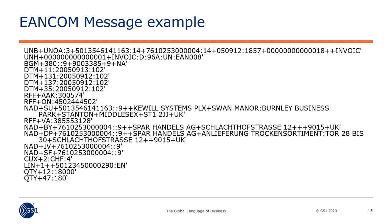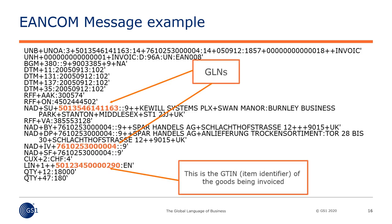Here is a typical EANCOM message, which, as you can see, is a little hard to read with the naked eye. The first three characters in each line describe the type of data. For example, DTM stands for date, time, month; QTY is quantity; and NAD is name and address. There are also several GS1 keys in the message, which we can all agree is very important.